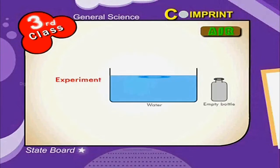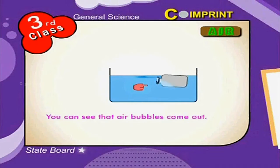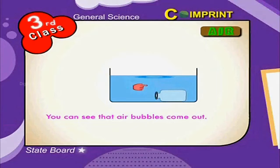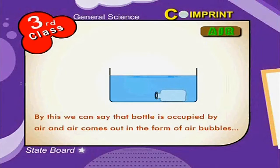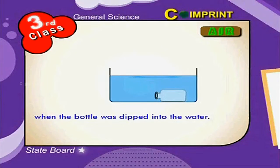Now let us know: is an empty bottle really empty? Dip the empty bottle into the water. You can see that air bubbles come out. By this we can say that the bottle is occupied by air, and air comes out in the form of air bubbles when the bottle is dipped into the water.